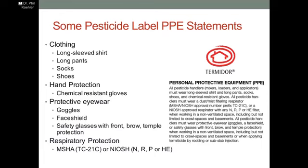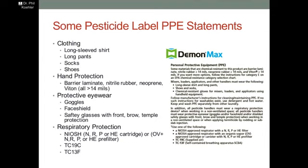People I've talked to have not been able to interpret parts of this language effectively. On another label, it's a fairly standard EPA process to require the manufacturer to put clothing requirements like long-sleeve shirt, long pants, socks, and shoes — identical. But hand protection is different on this label. For DemonMax, which is cypermethrin, it requires barrier laminate, nitrile rubber, and neoprene, all with a thickness greater than 14 mils. For protective eyewear: goggles, face shield, or safety glasses. Respiratory protection requires NIOSH NRP and HE cartridge or OV plus NRP or HE prefilter, then TC19C or TC13F.